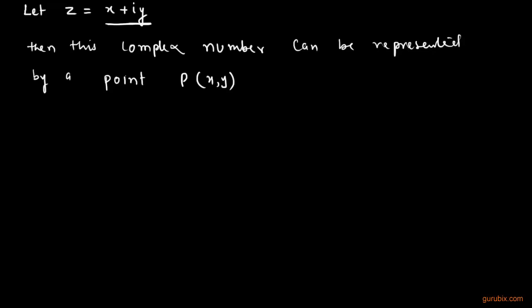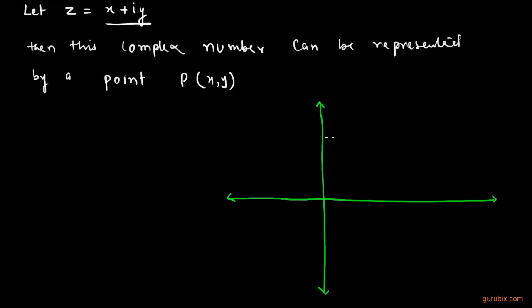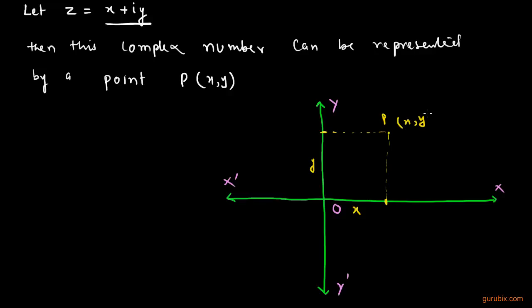Suppose we are given a plane on which we have to represent the given complex number x plus iota y. We have two mutually perpendicular straight lines x-dash-O-x and y-O-y-dash. Suppose this distance equals x, and this distance on y-O-y-dash equals y.